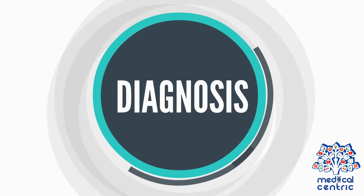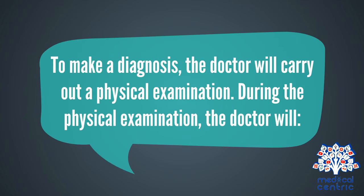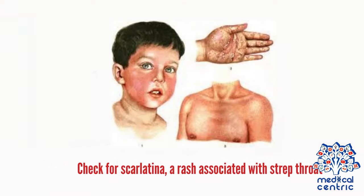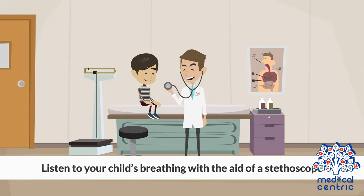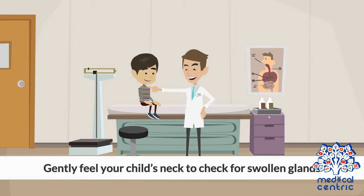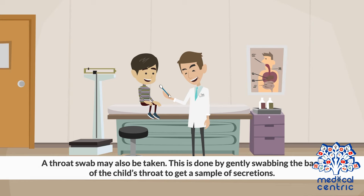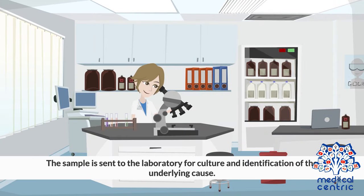To make a diagnosis, the doctor will carry out a physical examination. The doctor will check your child's throat and likely the ears and nose with the aid of a lighted instrument, check for scarletina — a rash associated with strep throat — listen to your child's breathing with a stethoscope, and gently feel the neck to check for swollen glands. A throat swab may also be taken by swabbing the back of the throat to get a sample of secretions, which is sent to the laboratory for culture and identification of the underlying cause.